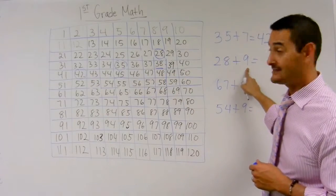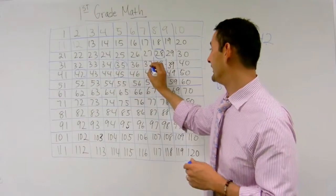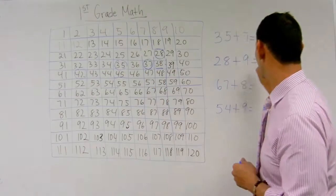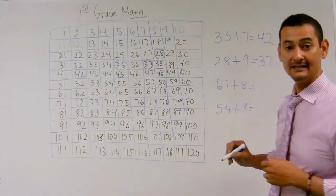I know that 9 is 1 less than 10, so I'm going to move back 1. So the answer is going to be 37. 28 plus 9 is 37.